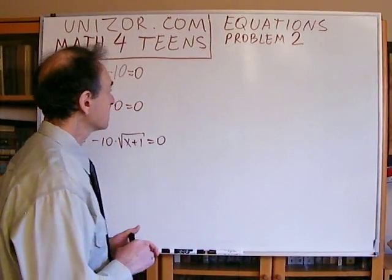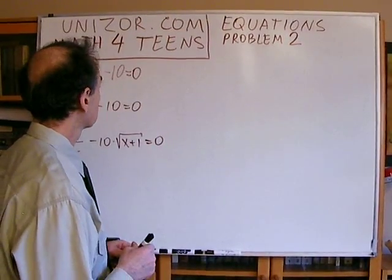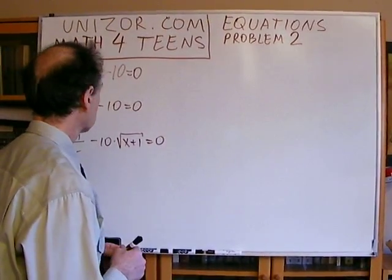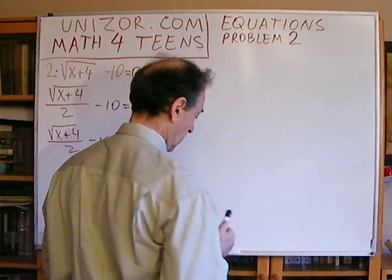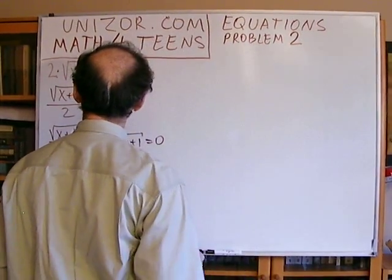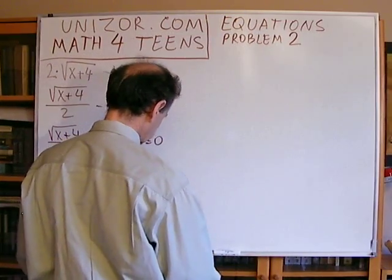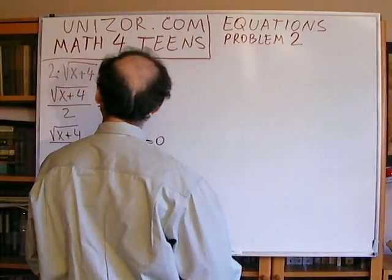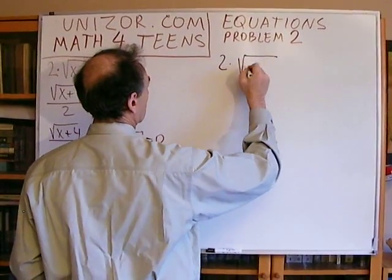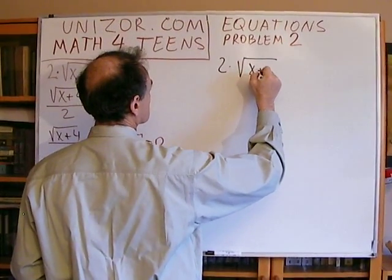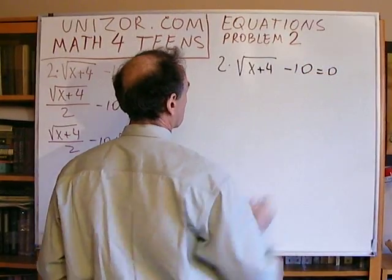Okay, in this case I have three different equations, and I will consider them separately. Let's do it one by one. Equation number one is: 2 times the square root of (x + 4) minus 10 equals zero.